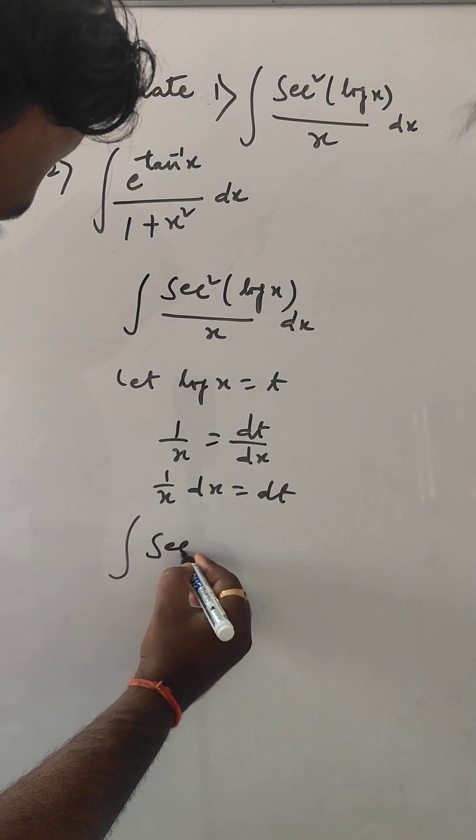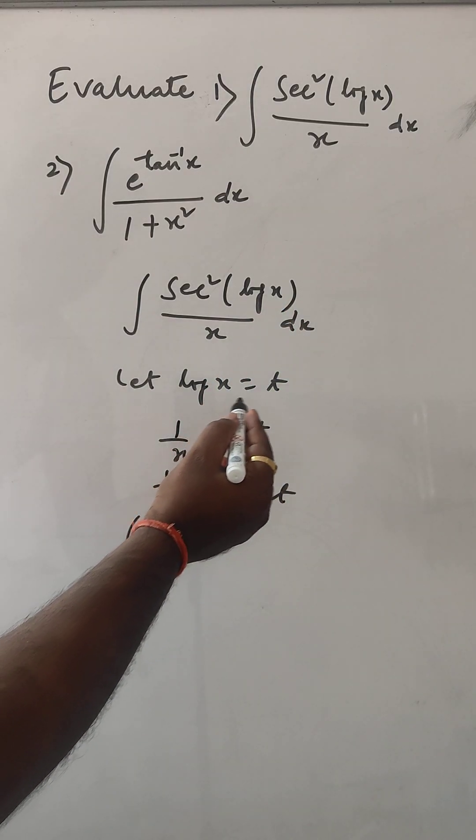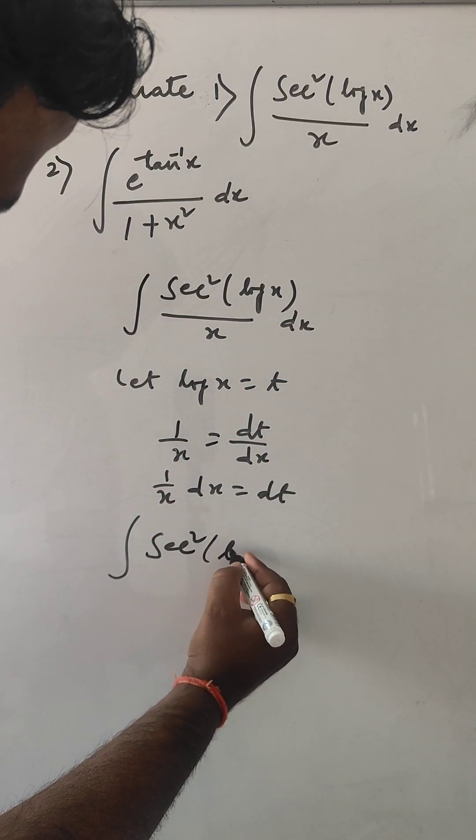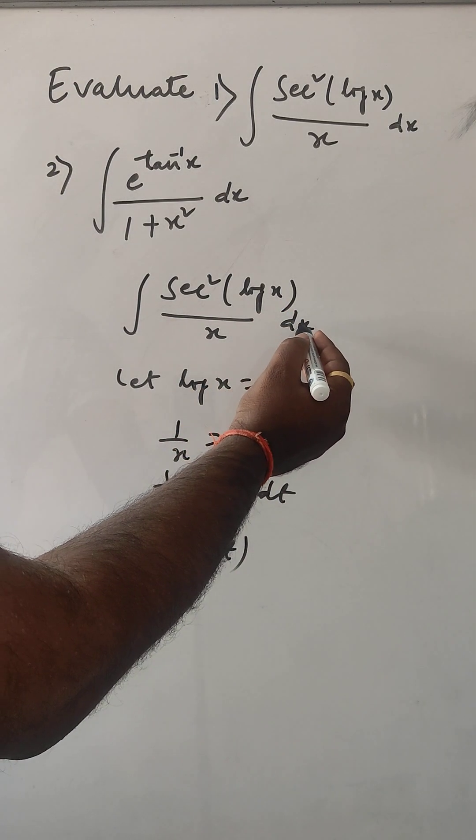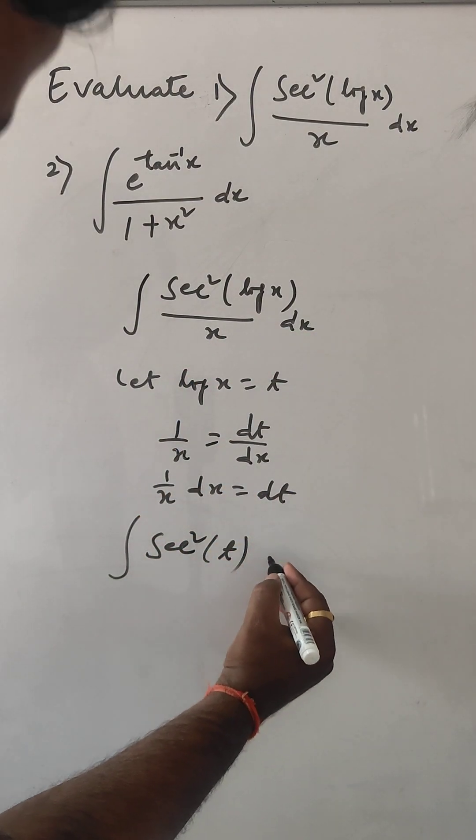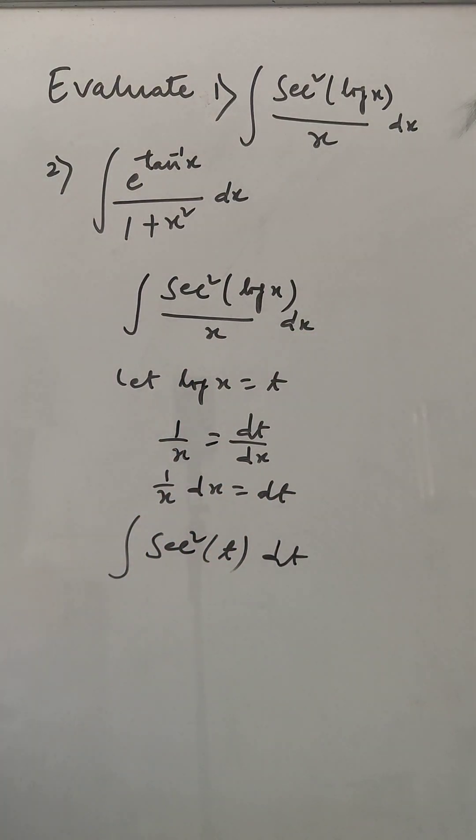sec square. In place of log x we can put t. And for dx by x we can put dt.